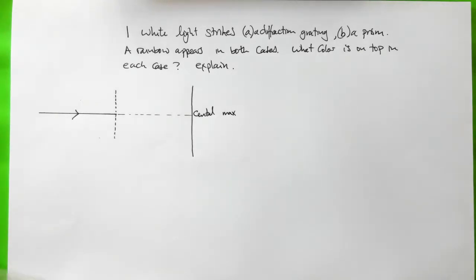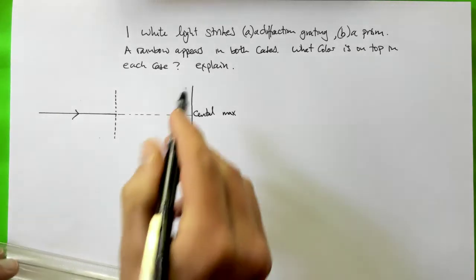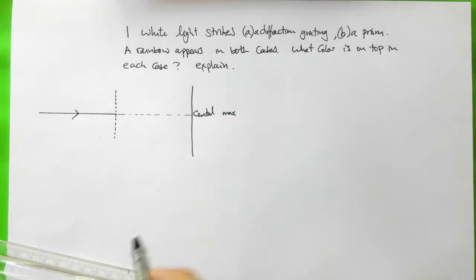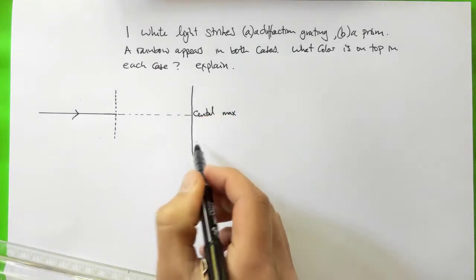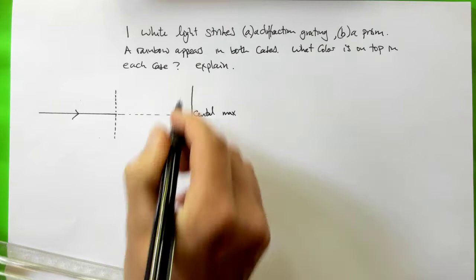Now we look at other wavelengths and we look at the other spots that will appear. There'll be a central maximum, there'll be a first order and a second order and a third order potentially on either side of the central maximum.